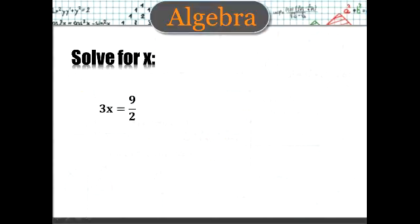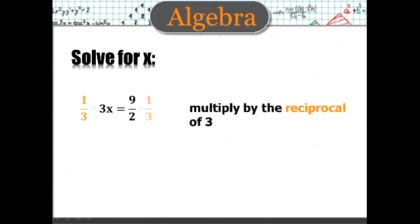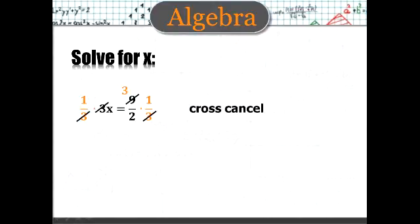Let's look at an example. Solve for x. 3x equals 9 over 2. Now the first thing I'm going to do there is multiply by the reciprocal of 3, which would be 1 third. Cross cancel. And voila! x equals 3 over 2. And the problem is solved. Now that's pretty easy. But notice the usefulness of reciprocals.